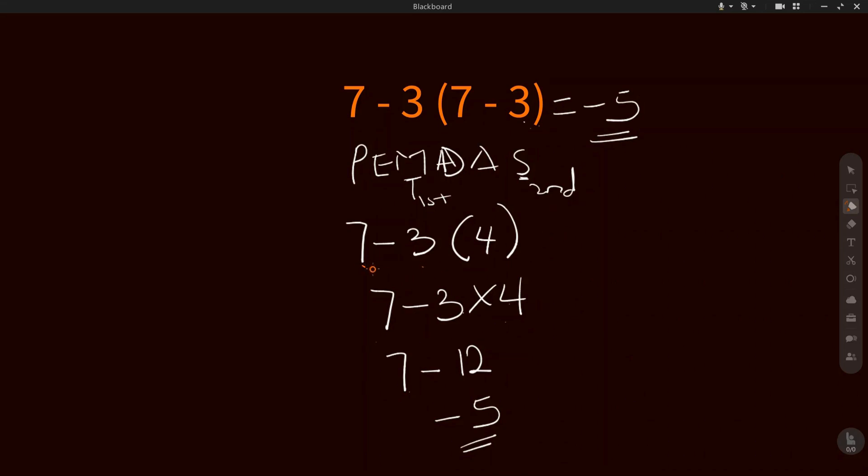When solving something like this, don't make the mistake of saying 7 minus 3 times 4. If you say 7 minus 3, that will give 4, and then you say times 4, this will give 16, and that would have been a wrong answer.